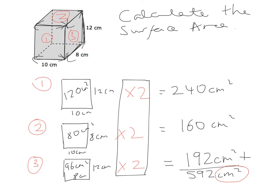In junior cert exams, that's the big mistake students make — they do all the hard work and then either forget to write in their units or write it as centimetres cubed. Hopefully that helped. I'd highly recommend drawing the three rectangles each time to make sure you don't make any mistakes.